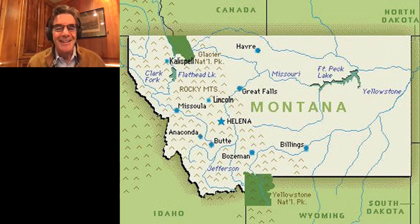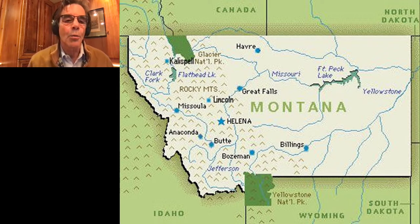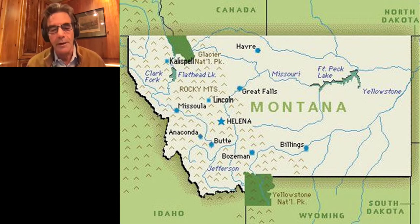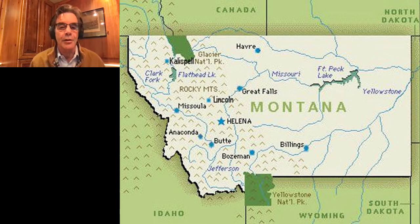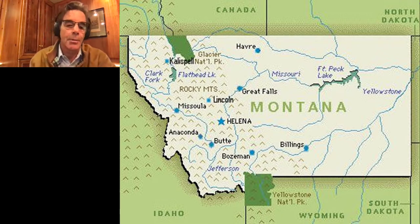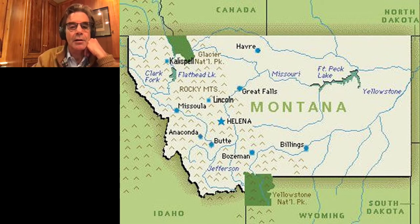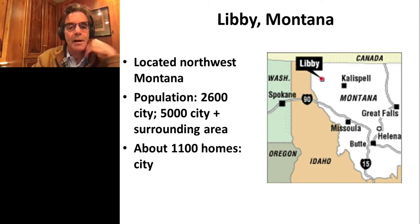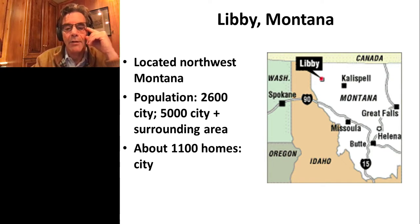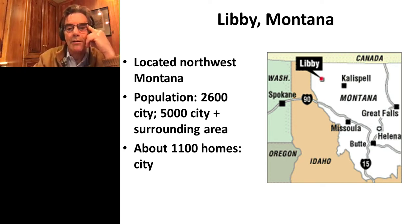This is a map of Montana. I'm going to talk about an area in the far northwest corner of Montana — one of the most remote areas in the lower 48 states — about 100 miles west of Glacier National Park. The brown on the map is the panhandle of Idaho. Libby, Montana is a little town of about 5,000 people, just a few miles south of the Canadian border and a few miles east of the Idaho border.